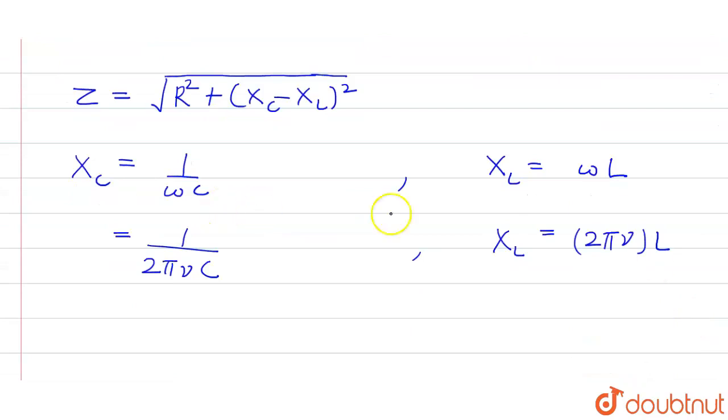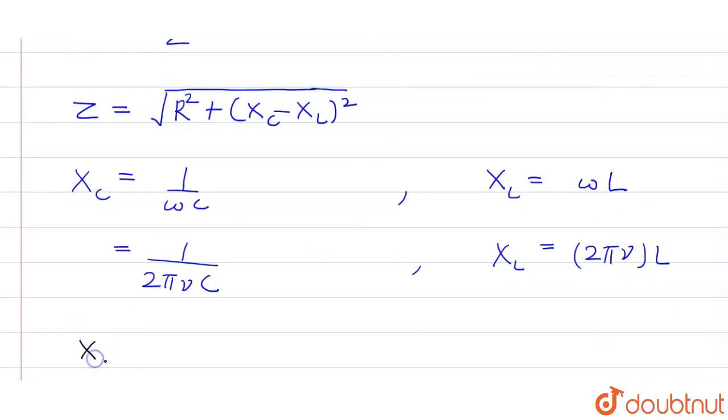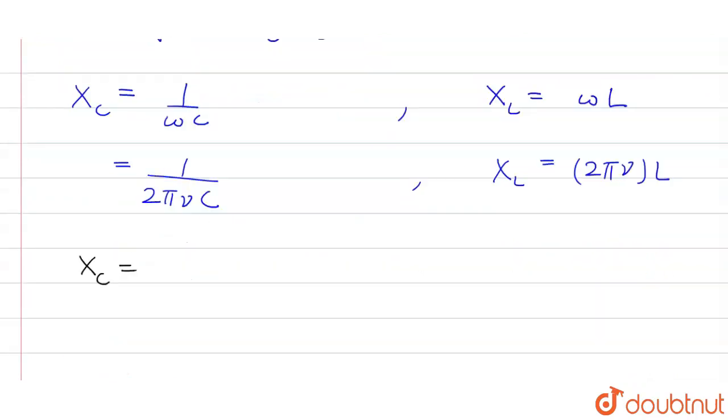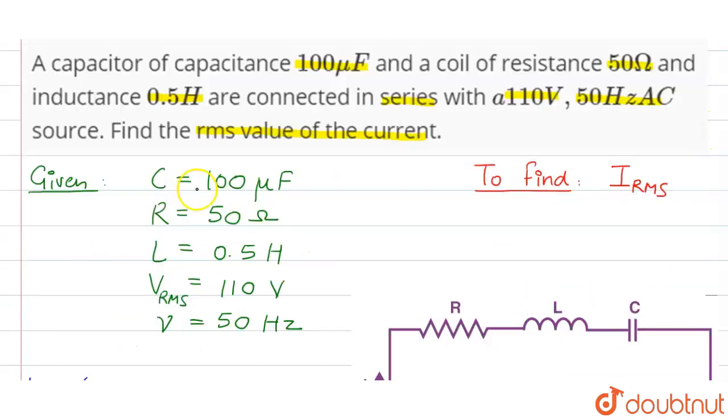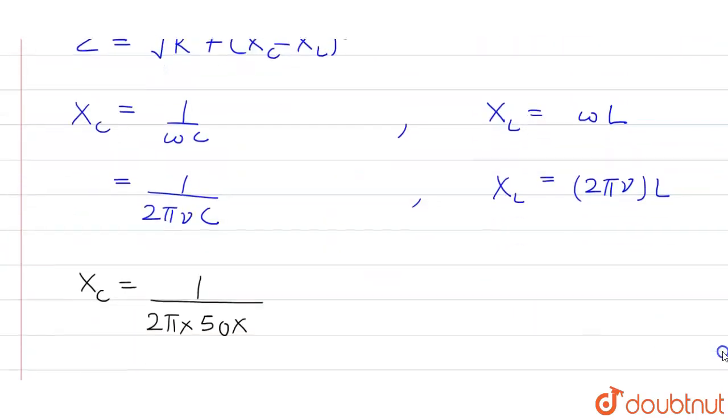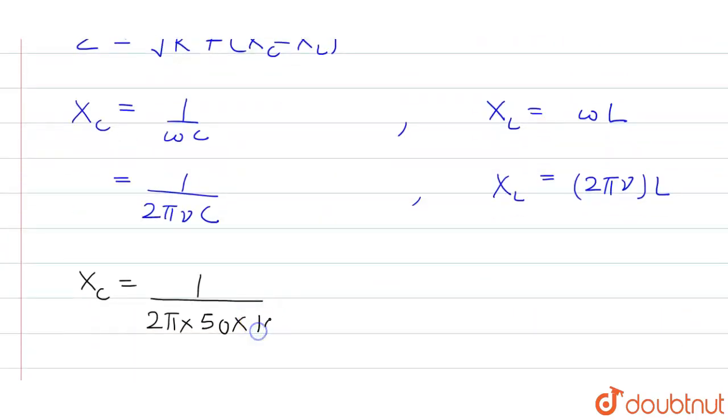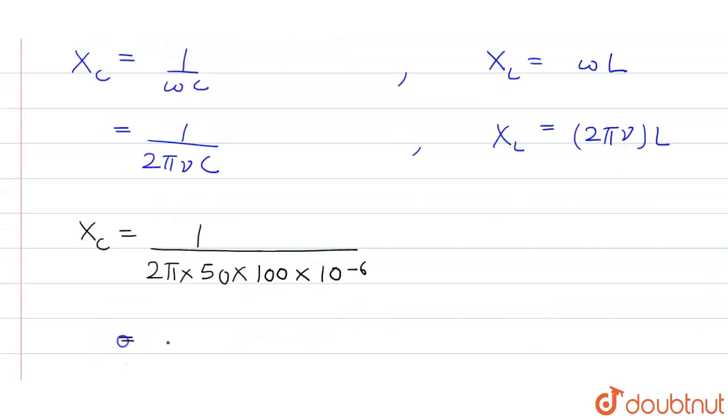So first we will find X_C and X_L. X_C is given as 1 upon 2πνC, that will be 1 upon 2π, frequency is given as 50 hertz, and capacitance is given as 100 microfarad, so it will be 100 times 10 to the power minus 6. Now on solving this we will get X_C as 31.83 ohms.